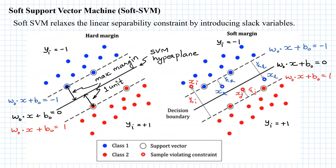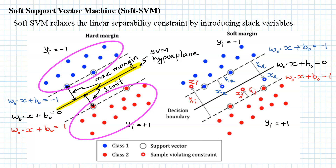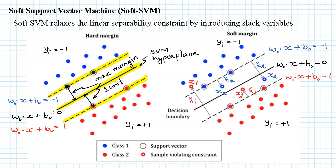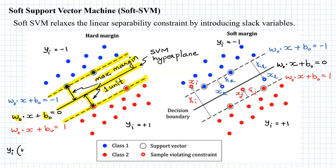In the hard SVM algorithm, we want the data to be not only linearly separable, but we also want all data points in both classes — the blue class as well as the red class — to be at least one unit distance away from the separating hyperplane. This is achieved by scaling the normal vector and constant b so that the maximum margin is one unit, giving the constraint: yᵢ(w₀·xᵢ + b₀) ≥ 1.